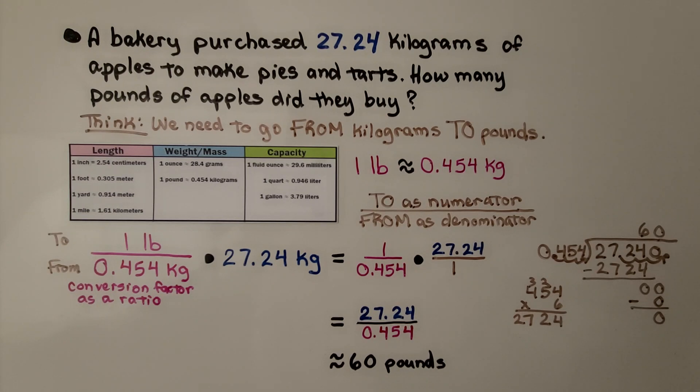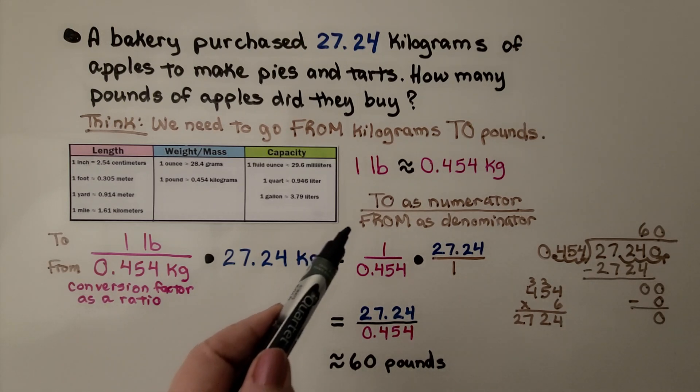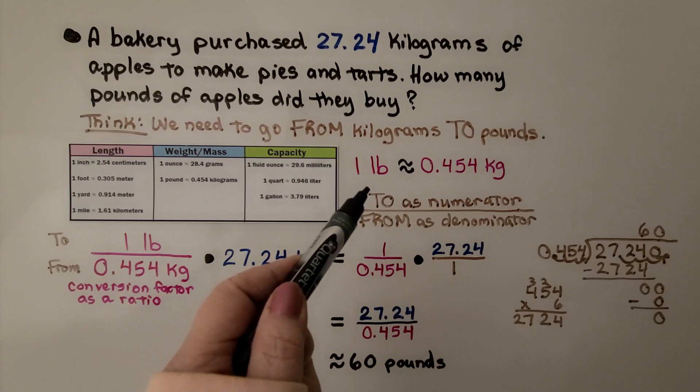A bakery purchased 27.24 kilograms of apples to make pies and tarts. How many pounds of apples did they buy? Think: we need to go from kilograms to pounds. So kilograms will be our 'from' as the denominator, and pounds will be the numerator.